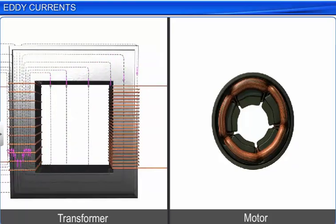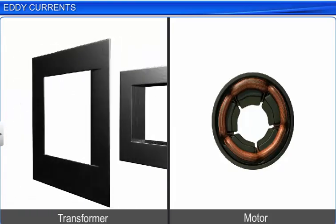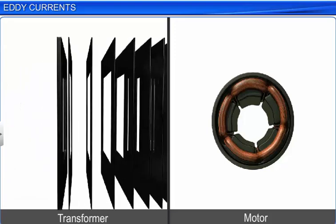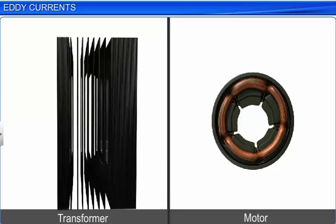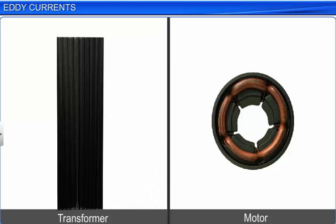Eddy currents are minimized by using laminations of metal to make a metal core, instead of using a single metal piece. The laminations are separated by an insulating material like lacquer. The plane of the laminations is arranged parallel to the magnetic field, such that it cuts across the eddy current paths. This arrangement reduces the strength of the eddy currents.